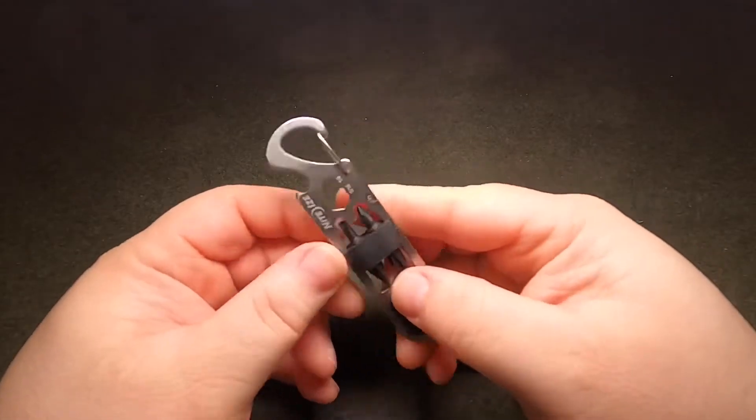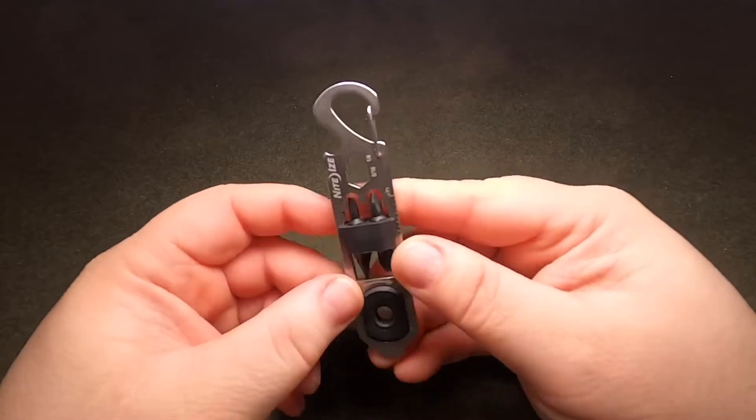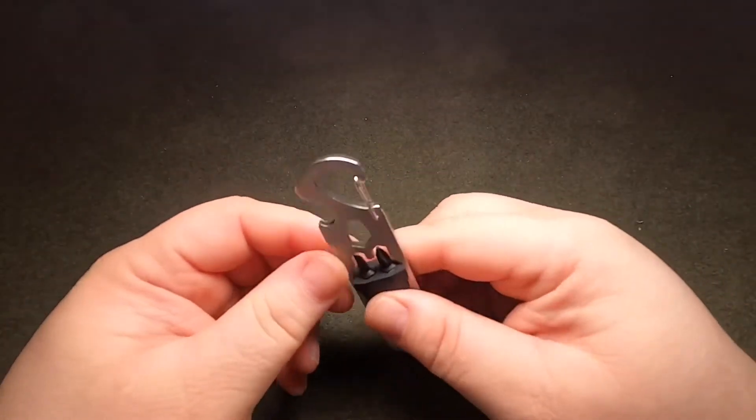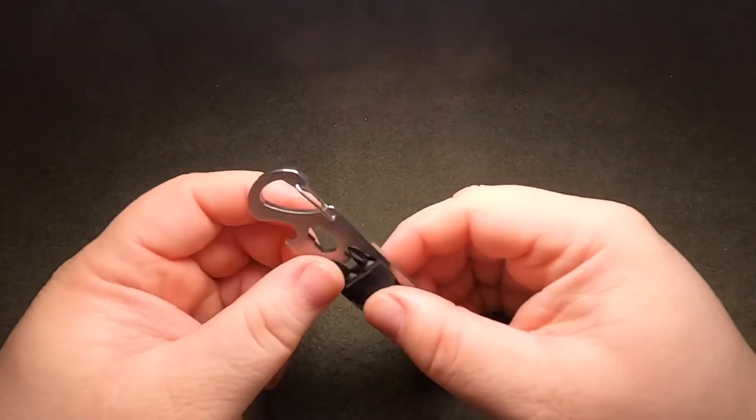This is the NightEyes Doohickey Ratcheting Key Tool. It's available on Amazon for $22.86 at the time of recording this video.